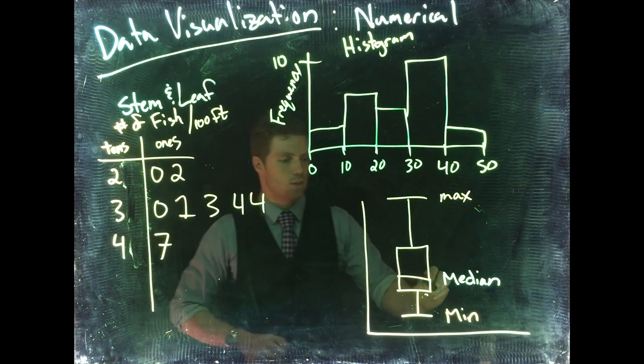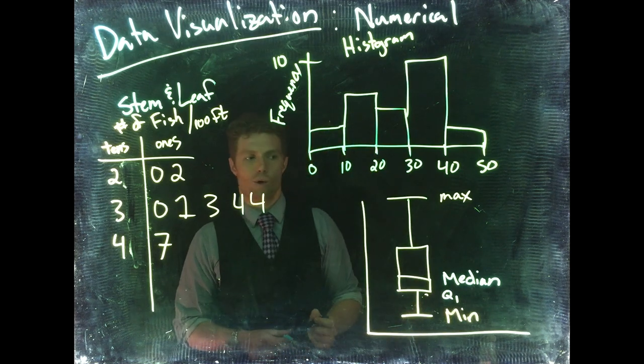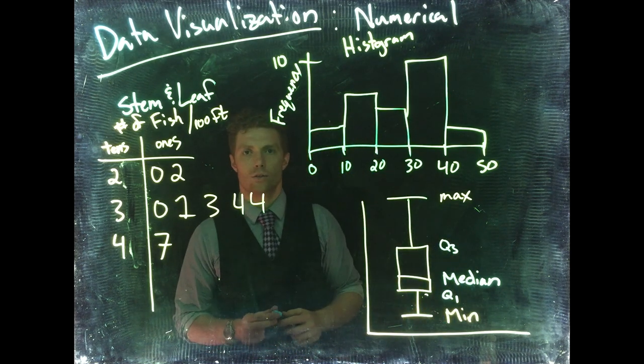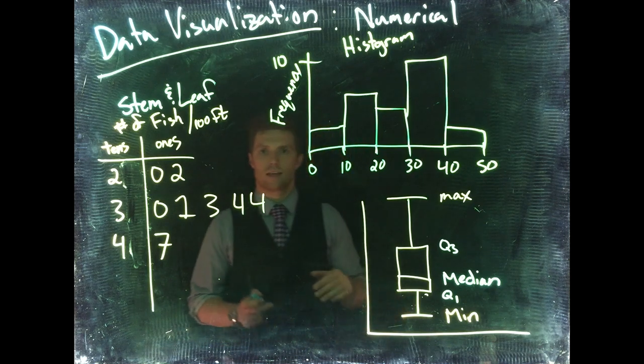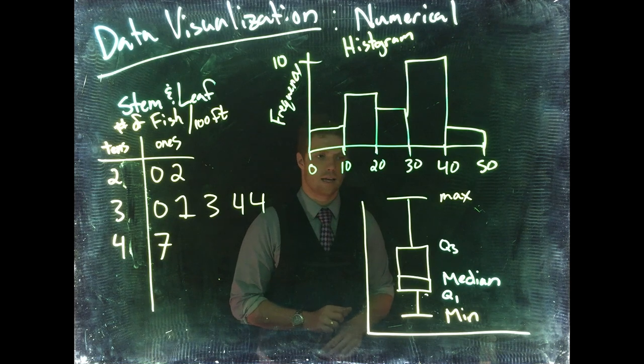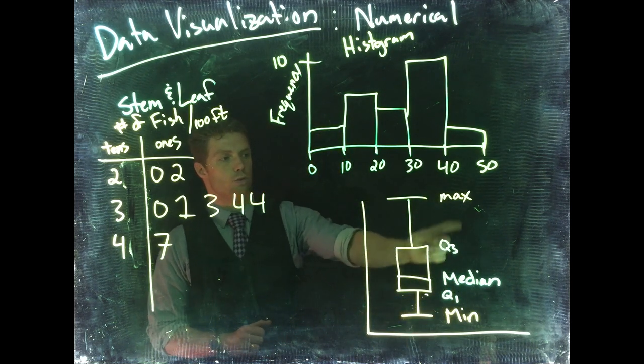Then we've got what's called Q1, which is quartile 1, and we've got Q3, which is quartile 3. And they're the middle points of the upper 50% of the data and the lower 50% of the data. So these numbers, minimum, Q1, median, Q3, and maximum, are known as our five-number summary.